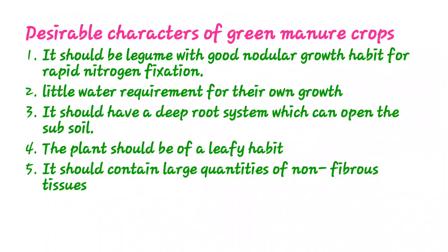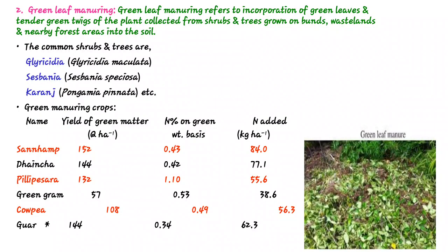The next type is green leaf manuring. In green leaf manuring, green leaves and tender twigs of plants collected from shrubs or nearby forests or wastelands are incorporated into the soil. In this method we collect different plant residues from different plants and bury them in the field.